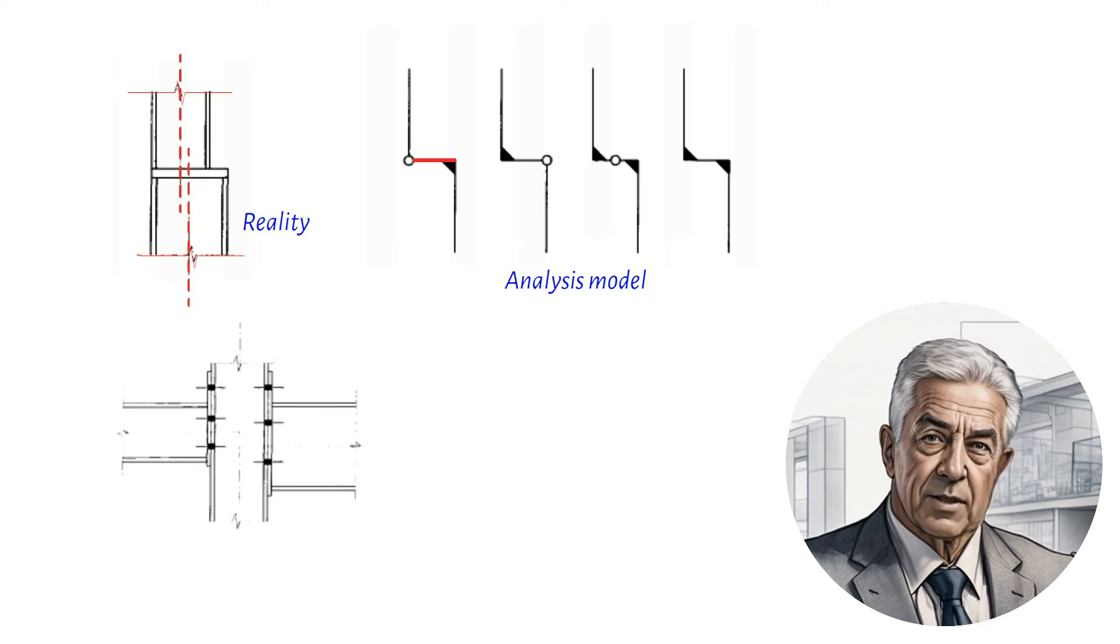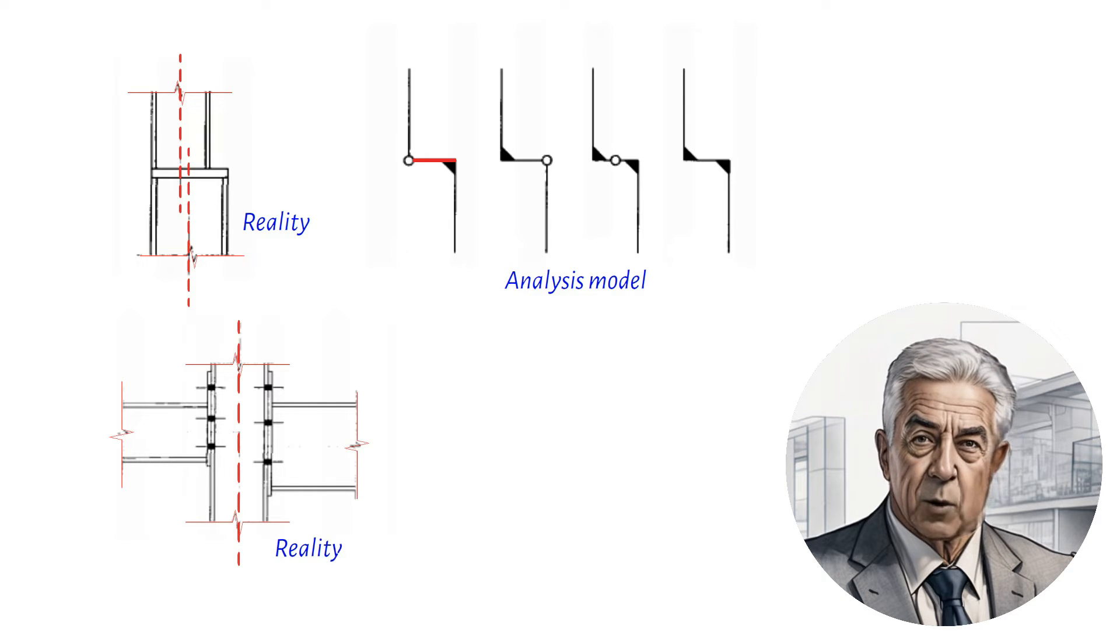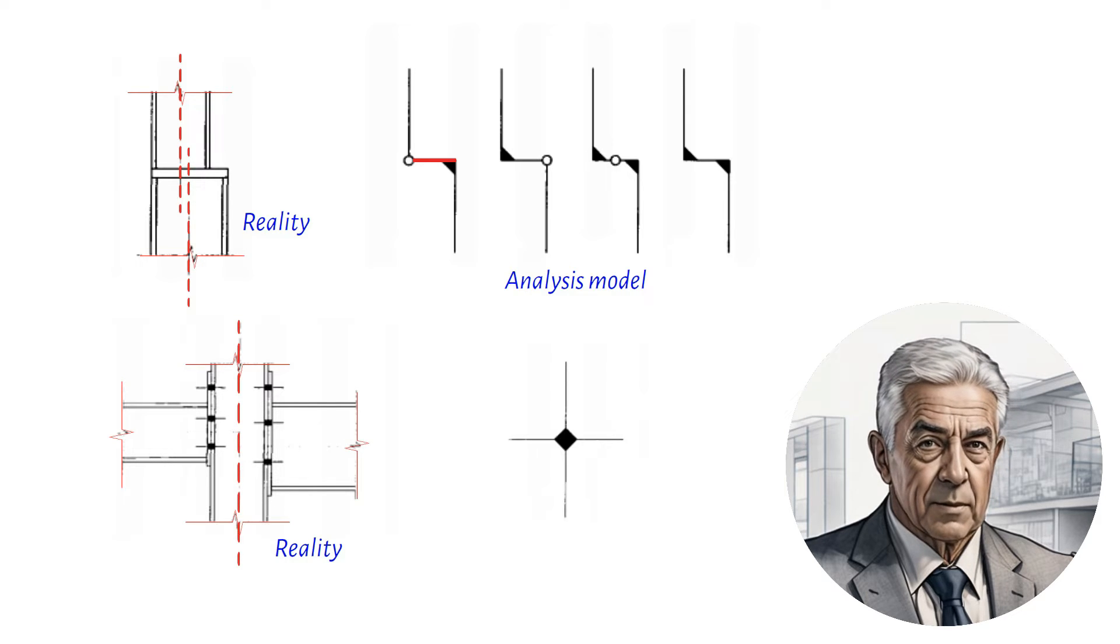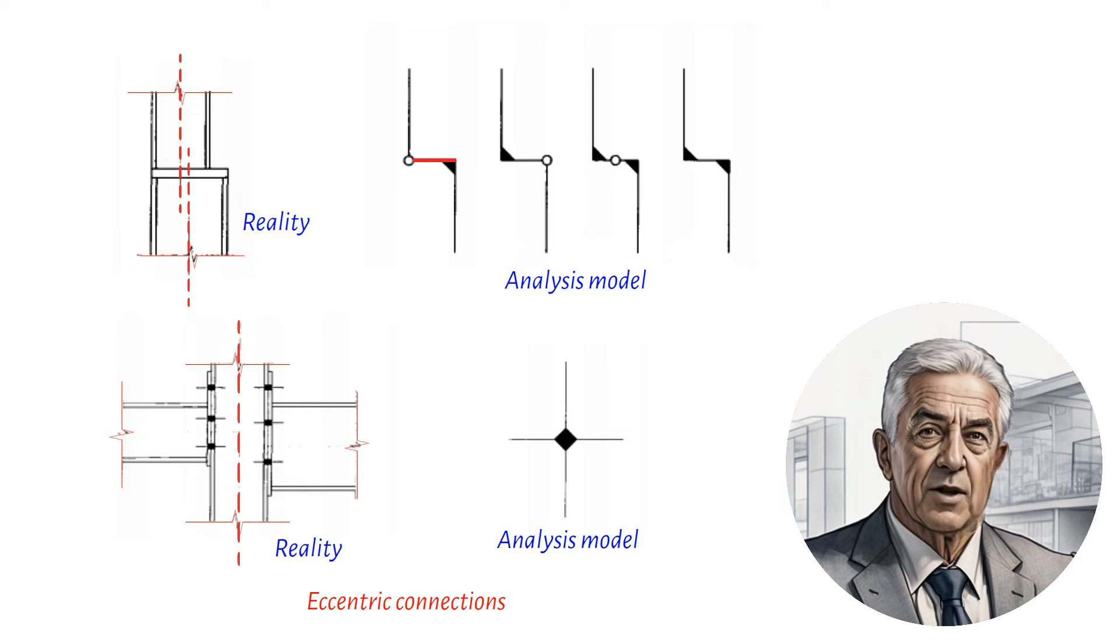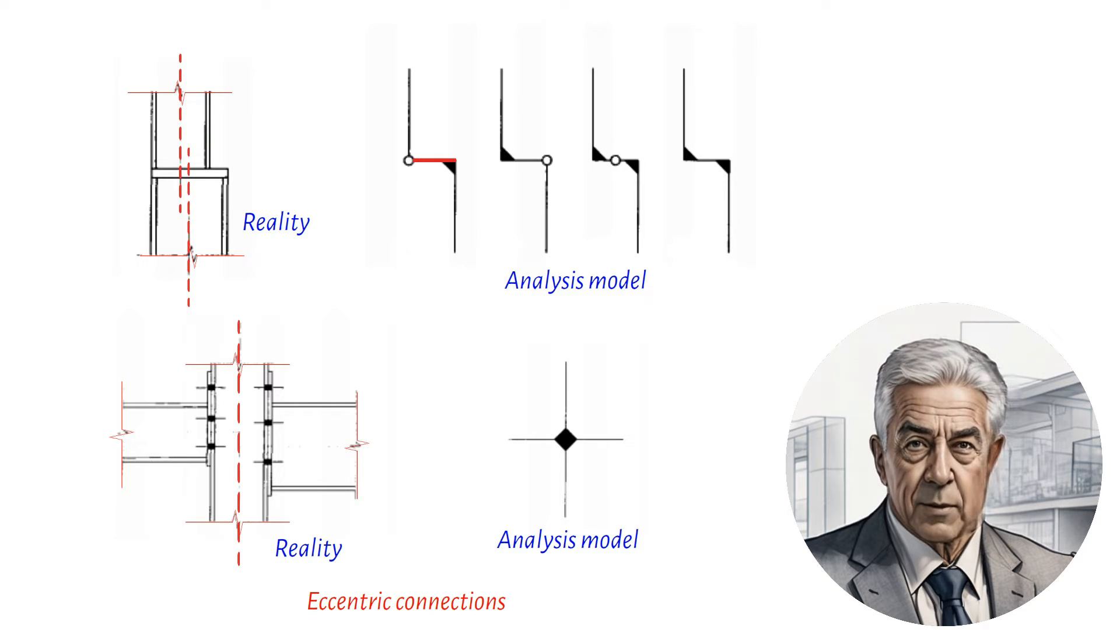The second example involves the offset of a smaller beam within the depth of a larger beam. If the smaller beam remains within the larger beam's depth, it is not necessary to model the offset, provided that any axial loads in the beams are small.